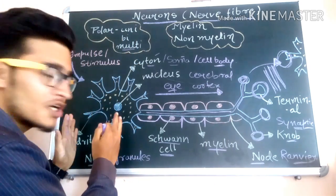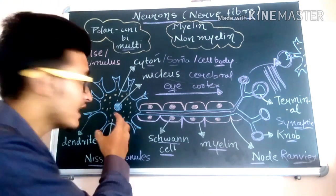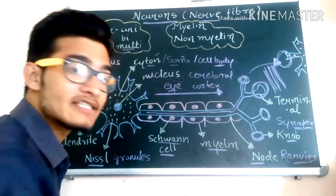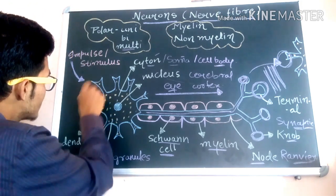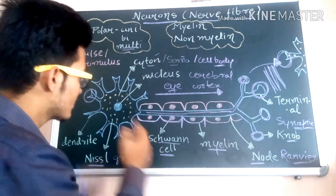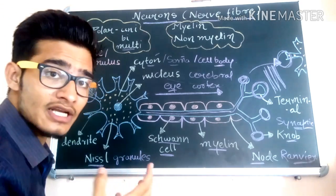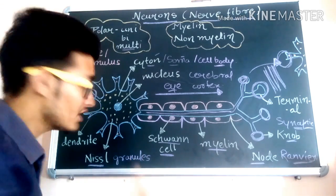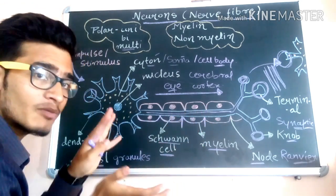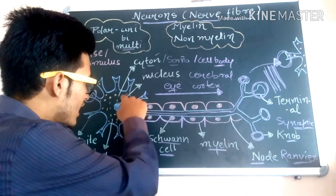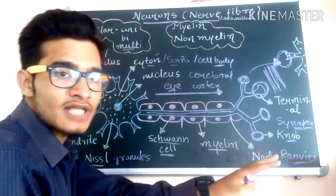This is the proximal end of a particular neuron and this is the distal end. From the proximal end, or the dendrite, it will catch the information — so these are known as the catching fibers. The dendrites will carry information towards the cytone, and the axon will transfer that particular information away from the cytone.